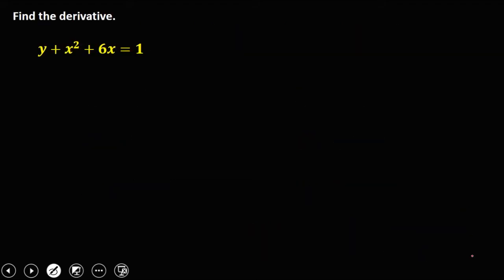Now for the first example: find the derivative of y + x² + 6x = 1. We differentiate every term. The derivative of y is y prime, the derivative of x² is 2x, the derivative of 6x is 6, and the derivative of the constant 1 is 0. To solve for y prime, transpose every term without y prime to the right: 2x and 6 move to the right, becoming negative 2x and negative 6.